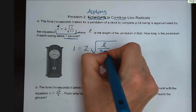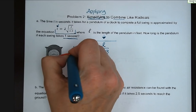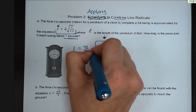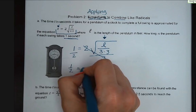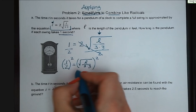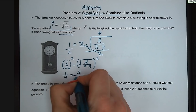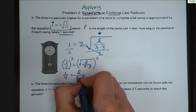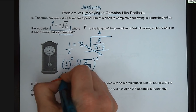We isolate the radical by dividing both sides by 2, giving us 1/2 equals the square root of l over 3.3. Square both sides: 1/4 equals l over 3.3. Multiply both sides by 3.3 and the length equals 0.825 feet. Don't forget your units.